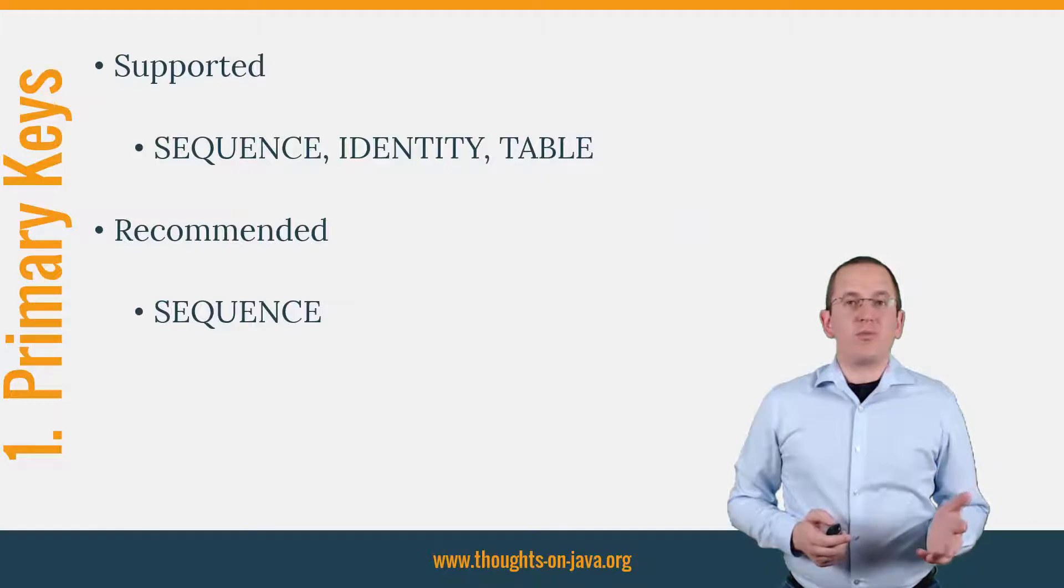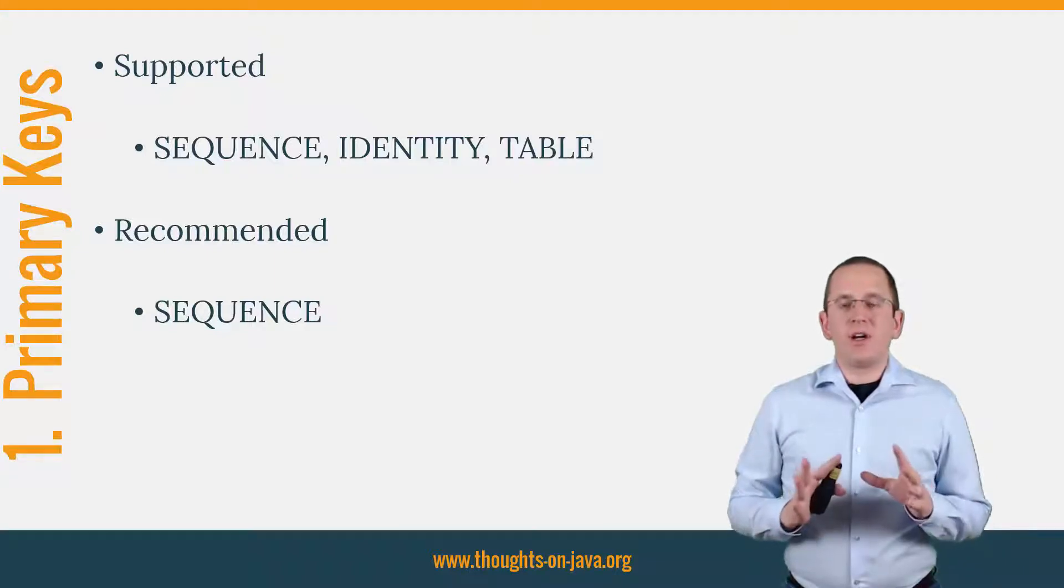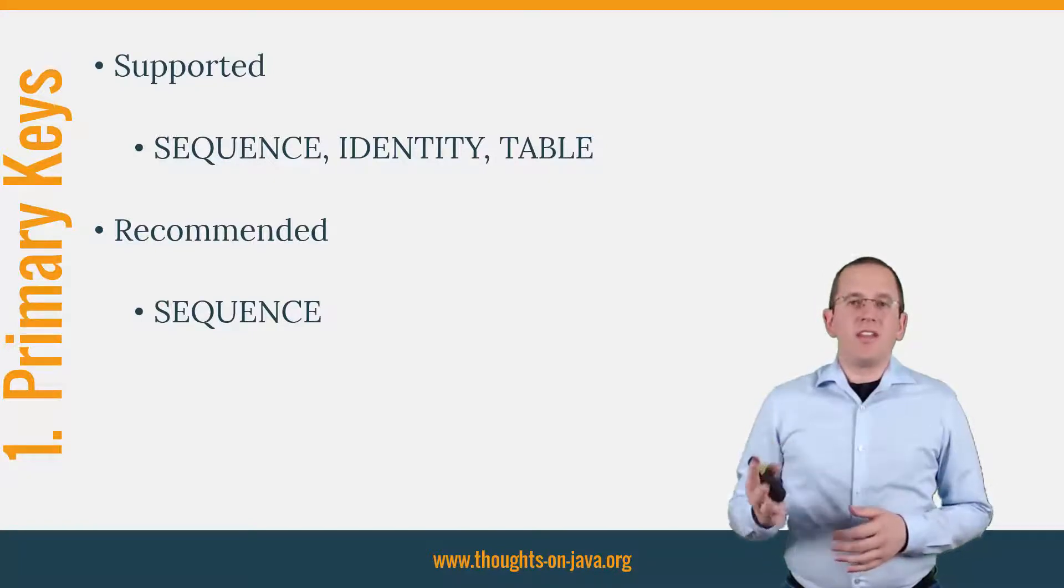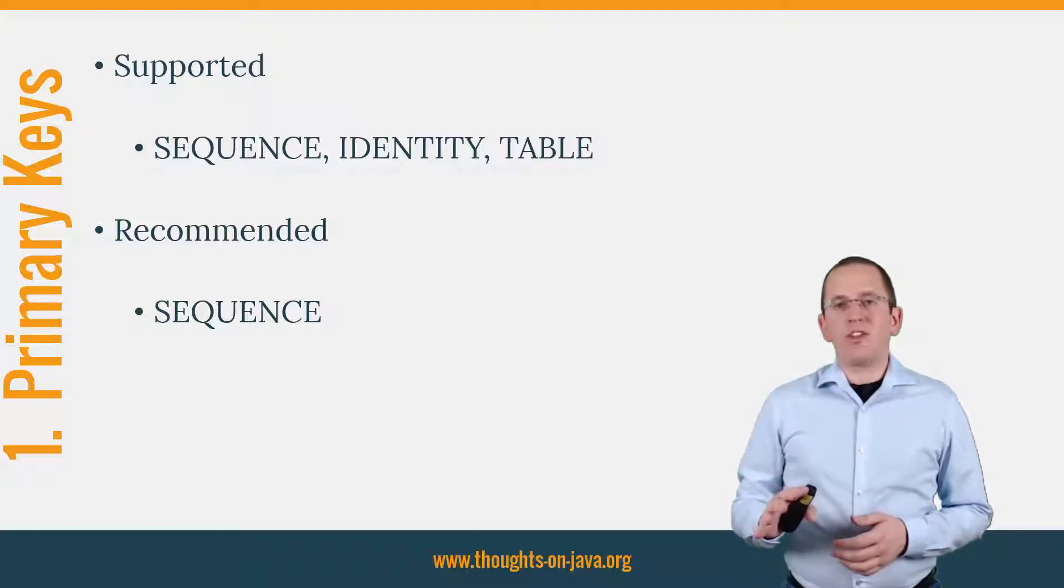First, generate primary keys. Primary keys and the generation of unique values seems to be basic features. The JPA specification defines different strategies to generate primary key values and you can use all of them with PostgreSQL. But that doesn't mean that you should just pick any one of them. The table strategy uses a database table to generate unique primary key values. This requires pessimistic locking and isn't the most efficient approach.